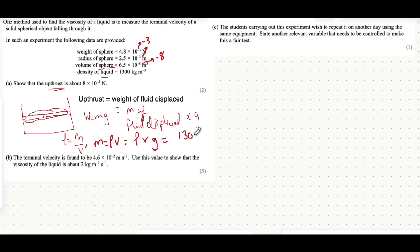For this question that's 1300 multiplied by the volume of 6.5 times 10 to the minus 8 multiplied by 9.81. In A-level physics I'd always recommend 9.81, but if you do A-level maths then 9.8 is preferred. That equals 8.3 times 10 to the minus 4 newtons, which rounds to 8 times 10 to the minus 4 newtons.